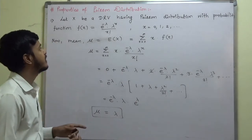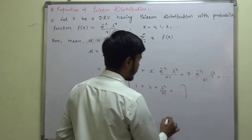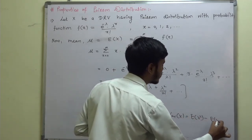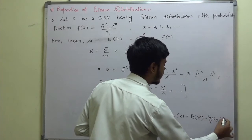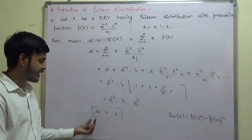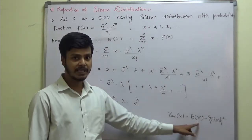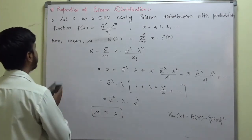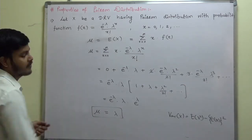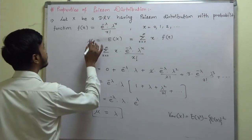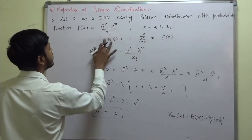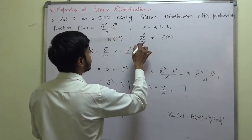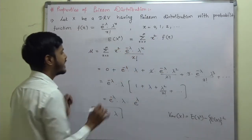Now, to find out the variance, recall that Var(x) = E[x²] − (E[x])². We have already found E[x] = λ. What we need to find is E[x²]. So let us find out E[x²], which equals the summation from x = 0 to infinity of x² · f(x).